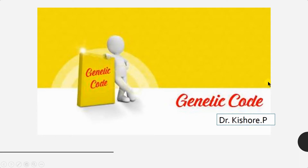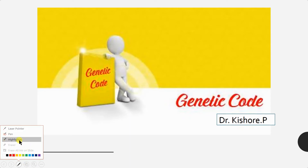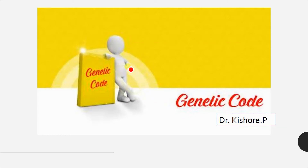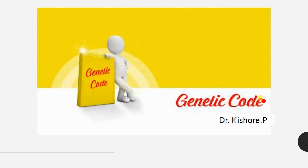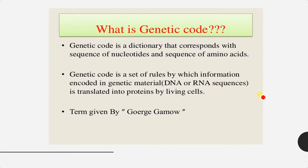Good morning students. In today's class we will discuss the genetic code and mutation. Both these topics are very important. In the last class we completed transcription in eukaryotes and prokaryotes along with post-transcriptional modification. In continuation of molecular biology, we know that DNA is replicated to form new DNA, from which mRNA is formed, and the nucleotide nitrogenous bases are converted into amino acid protein. To understand translation we must be thorough with the genetic code.